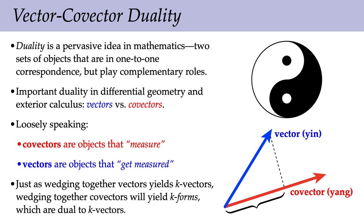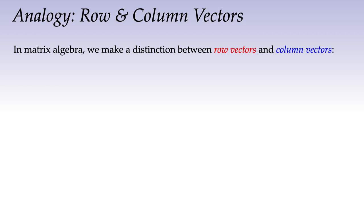This may seem redundant, but you have exactly this kind of duality in the familiar setting of matrix algebra. When you work with matrices, you often make a clear distinction between row vectors and column vectors. Both are just lists of numbers — you could have a row vector (α₁, α₂, α₃) or a column vector (u₁, u₂, u₃). The distinction indicates what we're trying to do: we want to combine them to produce a value. By taking advantage of the matrix product, we do a dot product or inner product of these two vectors.